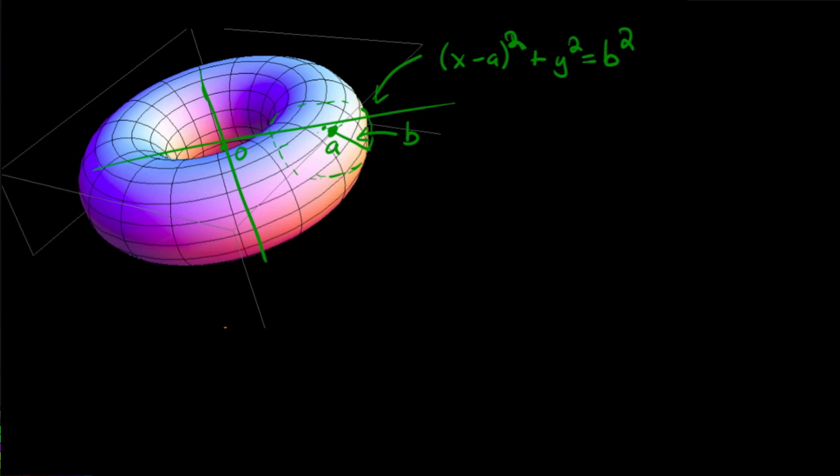So this circle of radius b is rotated around the y-axis. If you rotate it around the y-axis you form this shape that we see right here. It's called a torus.